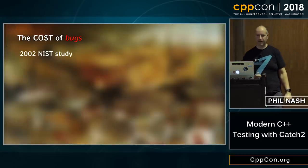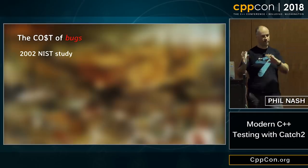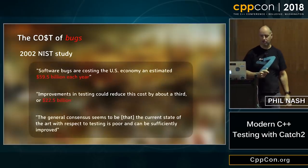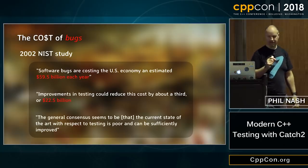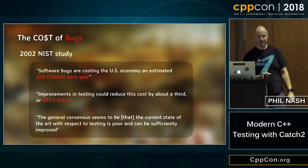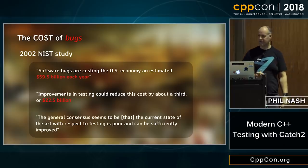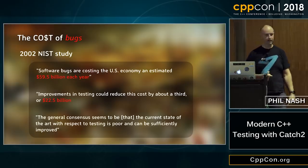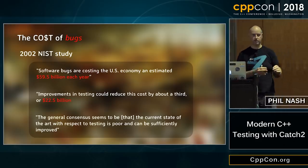There was a study in 2002 by NIST — there'll be references at the end if you want to look it up. A few choice quotes: software bugs were costing the US economy an estimated $59.5 billion each year. That's quite staggering if you think about it, just wasted on bugs. Improvements in testing could reduce this cost by about a third, or $22.5 billion. So testing alone won't solve the problem, but a big chunk of it could be improved.